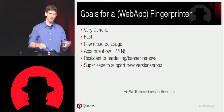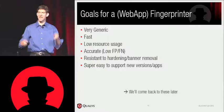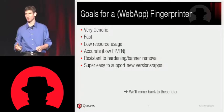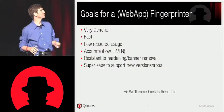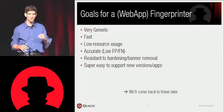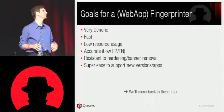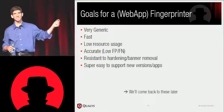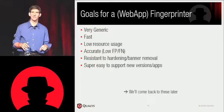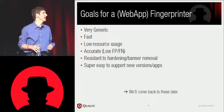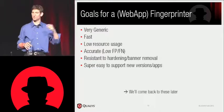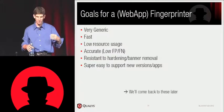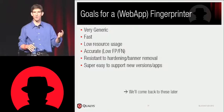We want it to be very generic — run the same code for every single app and every single plugin. We want this to be very data-driven: all the logic is in the data. We want it to be fast — you shouldn't have to go get a cup of coffee while this thing's running; ideally, you shouldn't even have to reach for your coffee. We want low resource usage — you shouldn't abuse the machine on the remote end, and you shouldn't need a gargantuan machine on your end. Accurate, low false positives, low false negatives — these are the things that make a tool actually useful. Resistant to hardening and banner removal. And I need to design a system that is very easy to support new apps, even for people outside who may only have access to a specific app.